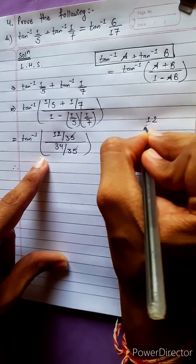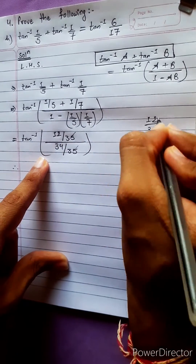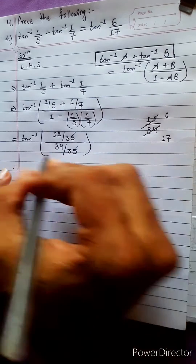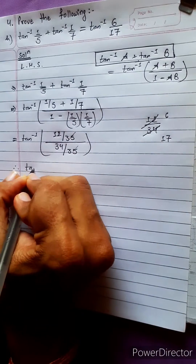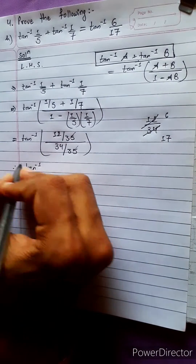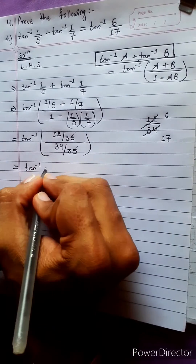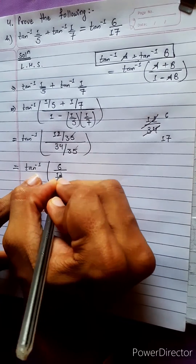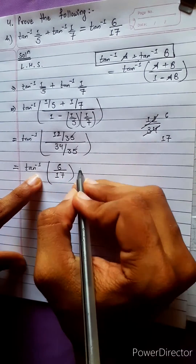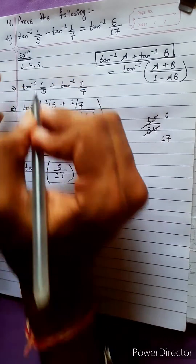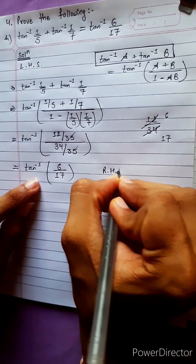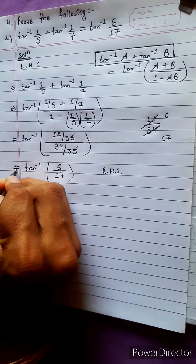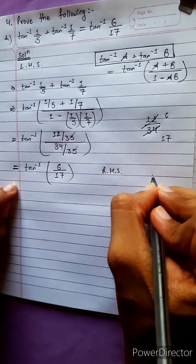Therefore, 12 by 34 simplifies: 2 sixes are 12, 2 ones are 2, 2 sevens are 14. So this equals tan inverse 6 by 17. This is LHS. Now RHS: LHS equals RHS. So proved.